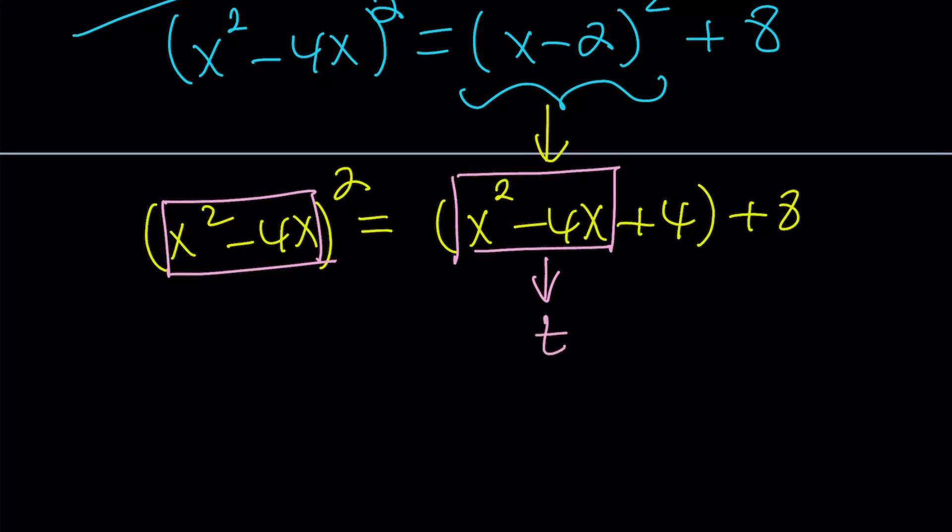So now I can call this something. The method is called substitution and it's awesome. Let's go ahead and call it t. And that's going to give us t squared equals t plus 4 plus 8, which is t plus 12. Awesome.